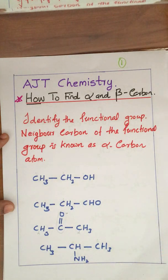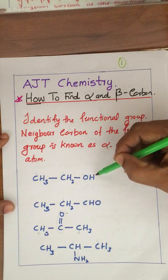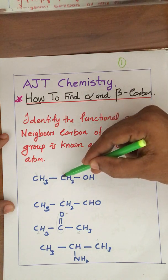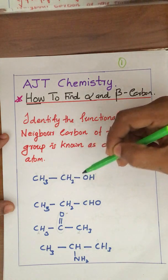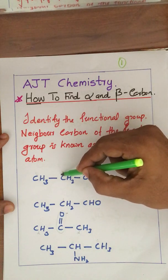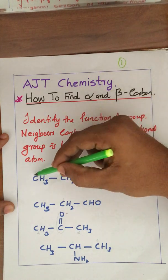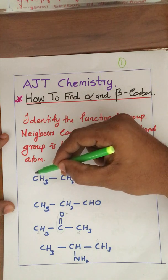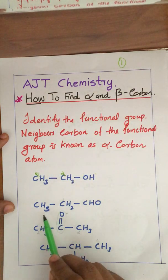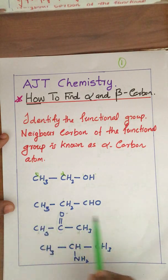First of all, the OH is the most important group. The carbon attached to the most important group is called the alpha carbon atom. The next carbon is called the beta carbon atom. Now look at CH3-CH2-CHO — it is an aldehyde.